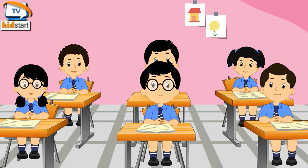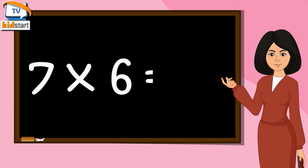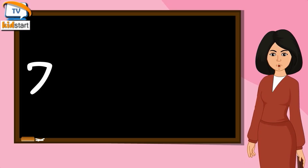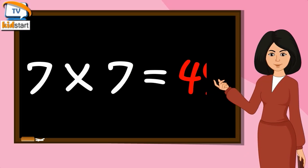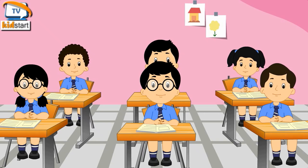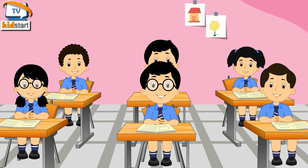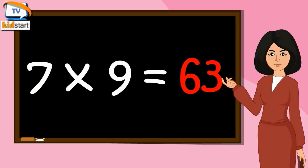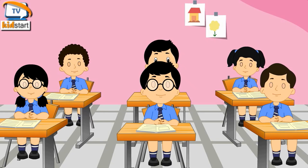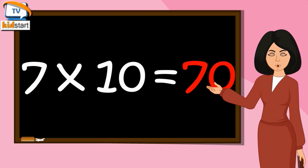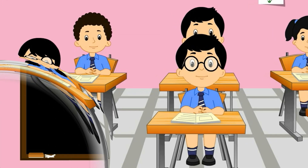7 fives are 35. 7 sixes are 42, 7 sixes are 42. 7 sevens are 49, 7 sevens are 49. 7 eights are 56, 7 eights are 56. 7 nines are 63. 7 tens are 70, 7 tens are 70.